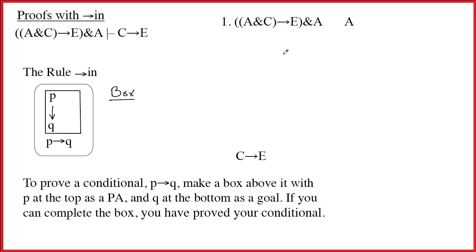From this point on, we always start proofs by doing as many things at the top as we can. Arrow out, ampersand out, ampersand in. If there's any of those things you can do, you should. So obviously the main connective on this first line is an ampersand. We should just go ahead and break that up.